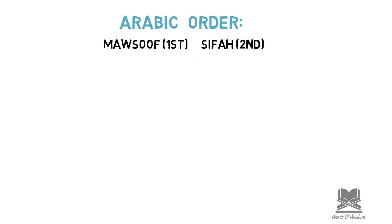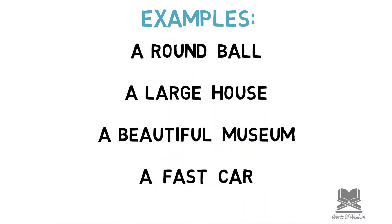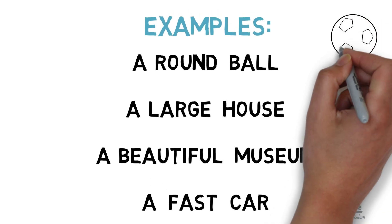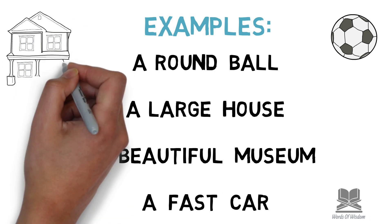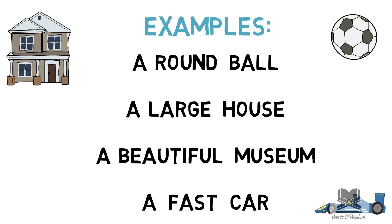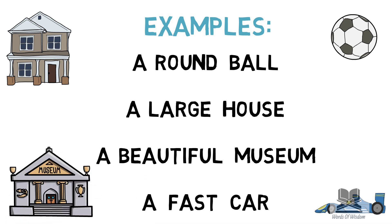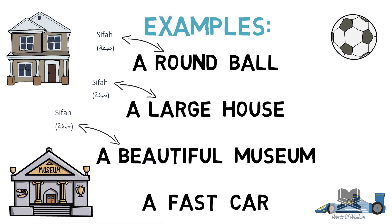Let's take a look at a few examples to digest this concept: a round ball, a large house, a beautiful museum, a fast car. In all of these examples, whichever word is being used to describe something, that word in English is known as an adjective and in Arabic is known as a sifa. So in 'a round ball', round is the description; 'a large house', large is the description; 'a beautiful museum', beautiful is the description; 'a fast car', fast is the description.